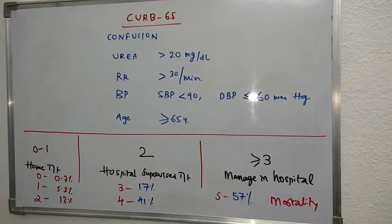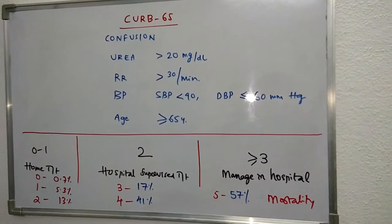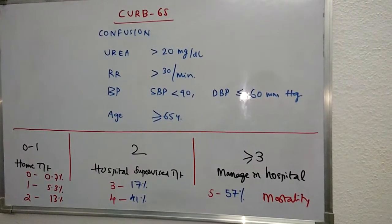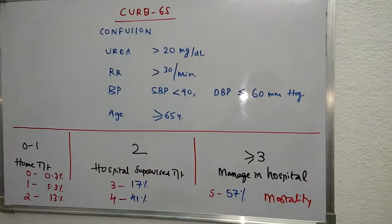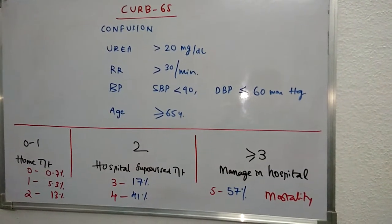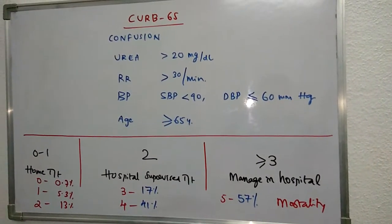Let us learn about the CURB-65 score today. It's a score used to predict outcomes in consolidation patients, assess mortality percentages, and decide appropriate treatment.